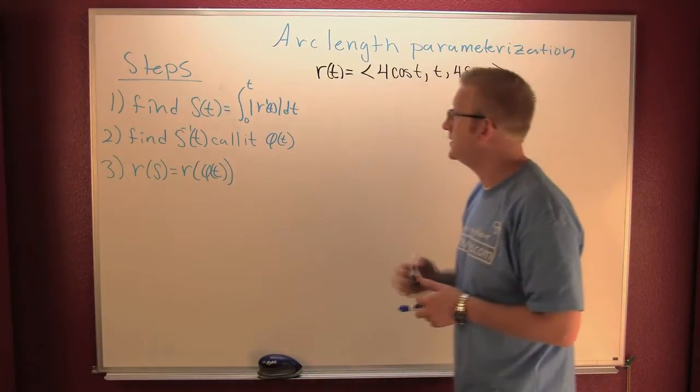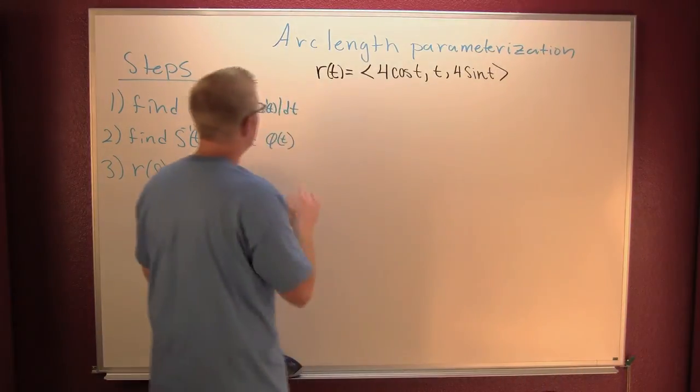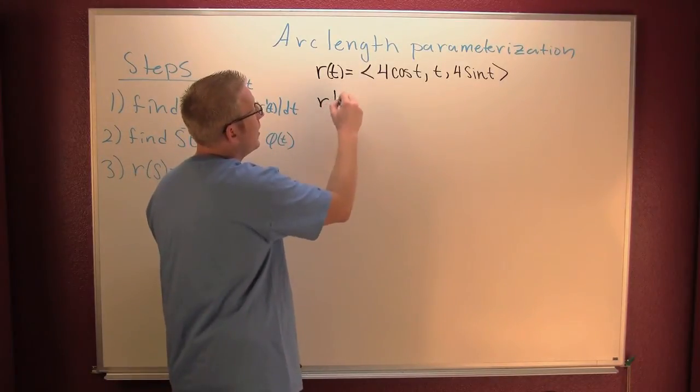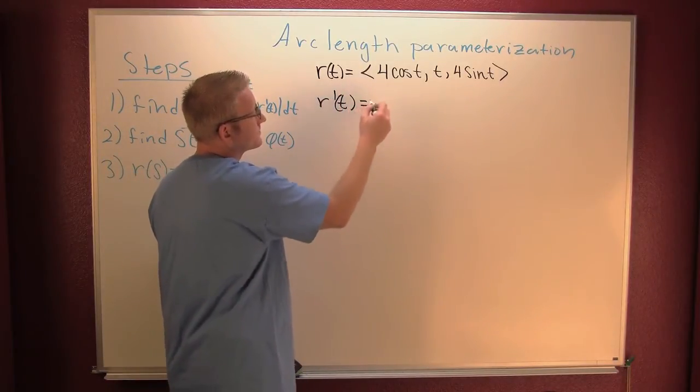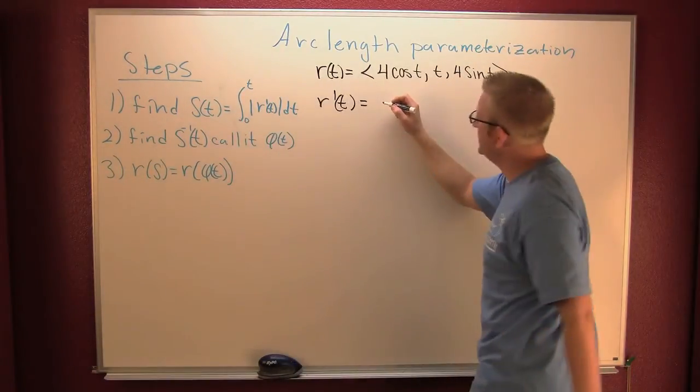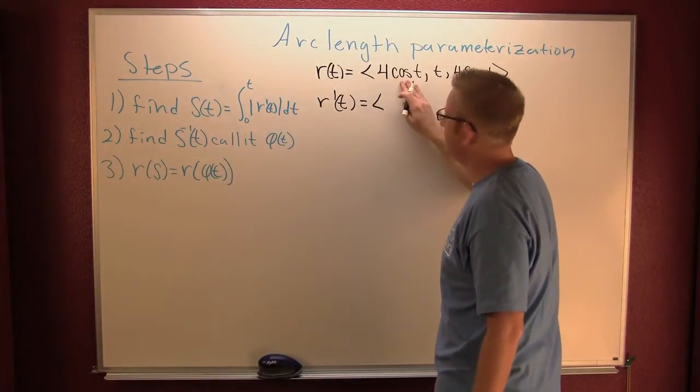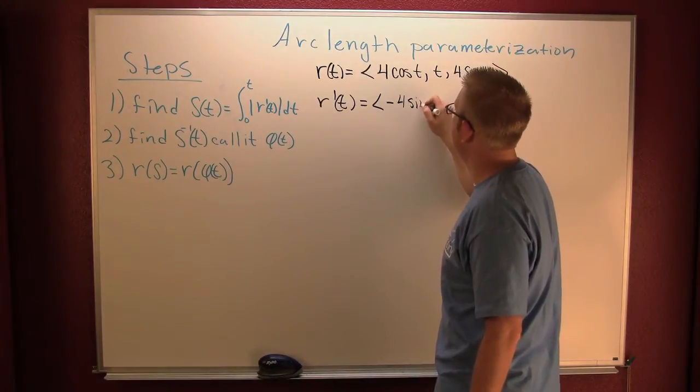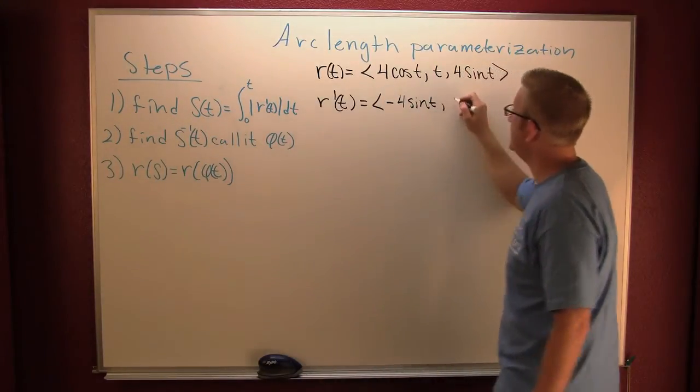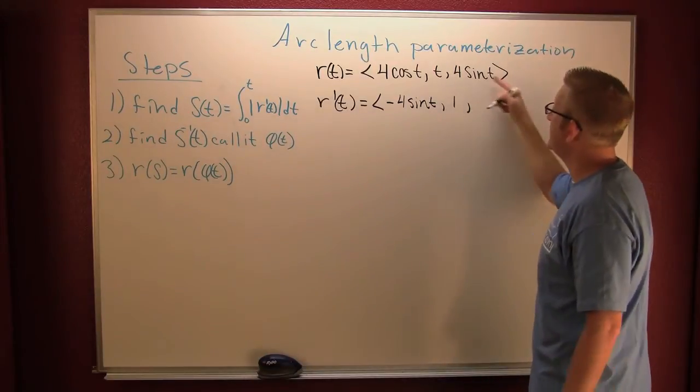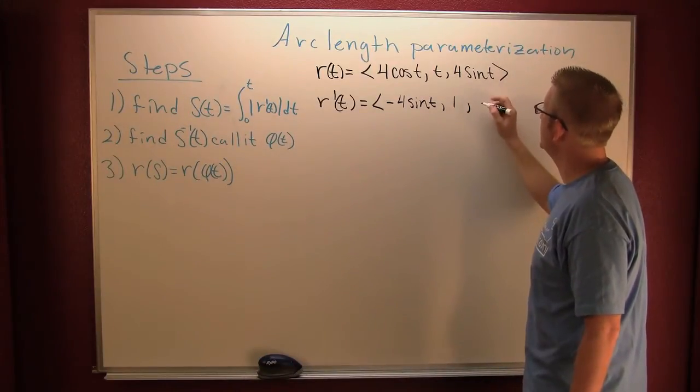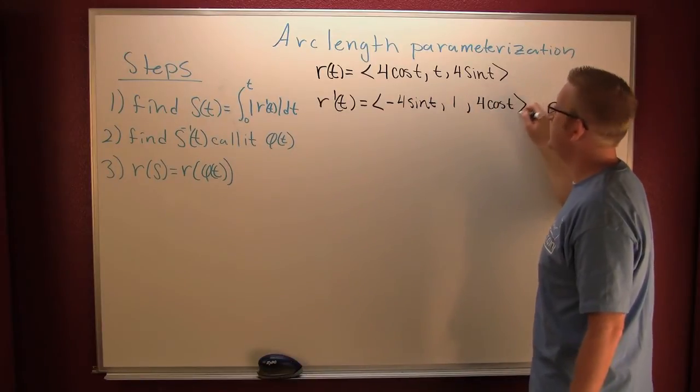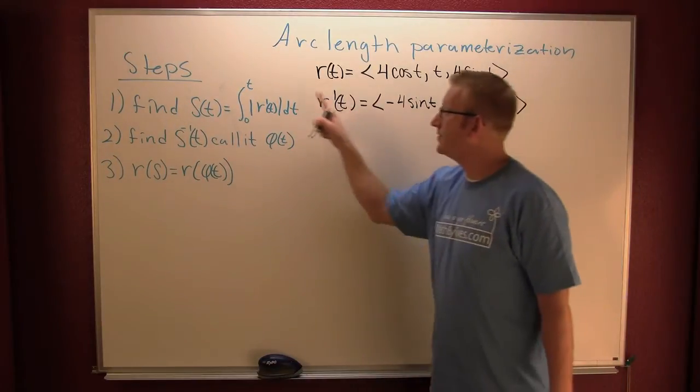So what do we need? We need the derivative. So here we find R'(T). That's gonna be, oh wait for it, derivative of cosine, yeah, minus 4 sine T. Derivative of T is 1, and for sine T this is going to be 4 cosine T.